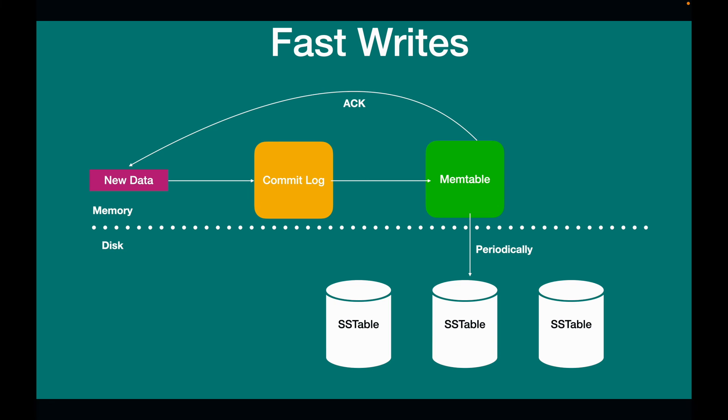Periodically, the mem table from memory is flushed to the SSTable on disk to store the data permanently. Given Cassandra's distributed nature, it can make do with writing to a mem table when a write comes in instead of writing to disk every single time. That's why compared to most databases where data is stored to disk immediately, Cassandra tends to be significantly faster for writes.